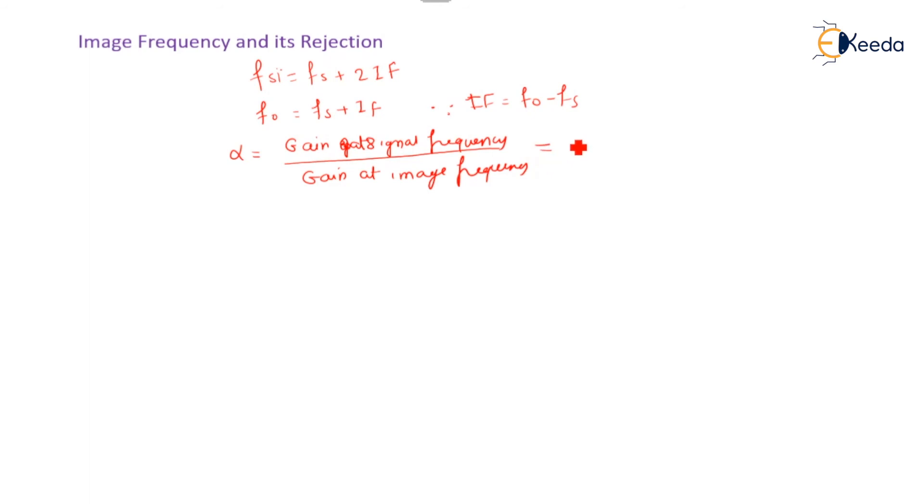The value of this gain is given by the relation 1 plus q square rho square. Here, q is called the loaded q of tuned circuit. Here, rho is equal to FSI upon Fs minus Fs upon FSI. Now, this is called the image frequency rejection ratio.